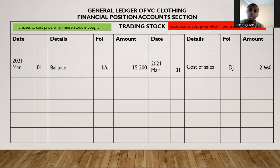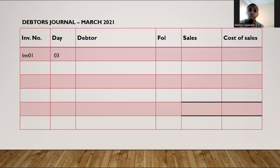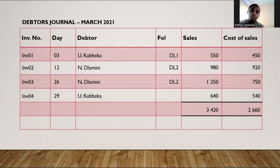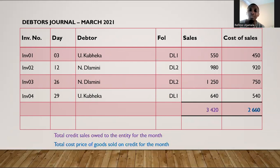Please note that this cost of sales figure of $2,660 from the debtors journal is simply the cost price of goods sold on credit. When you go to your debtors journal, you'll have a sales column and a cost of sales column. The total of cost of sales — from $450 plus $920 plus $750 — gives you $2,660. That $2,660 will reduce the value of your trading stock; it represents the total cost of goods sold for the month of March.